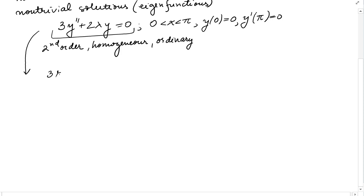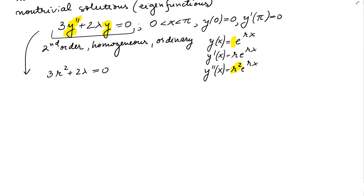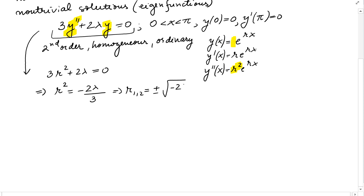The characteristic equation is 3r² + 2λ = 0. There is no r term because in Chapter 4, solutions were of the form e^(rx). The first derivative gives r·e^(rx) and the second derivative gives r²·e^(rx), which is why replacing y'' gives r², and replacing y gives 1 (after factoring out e^(rx)). Solving for r gives r² = −2λ/3, so r₁,₂ = ±√(−2λ/3).